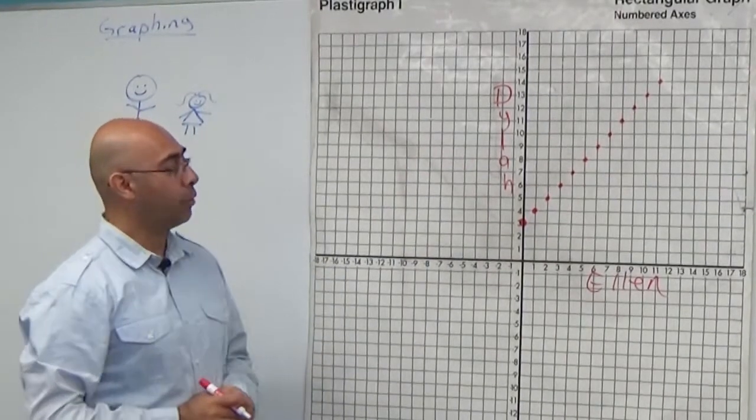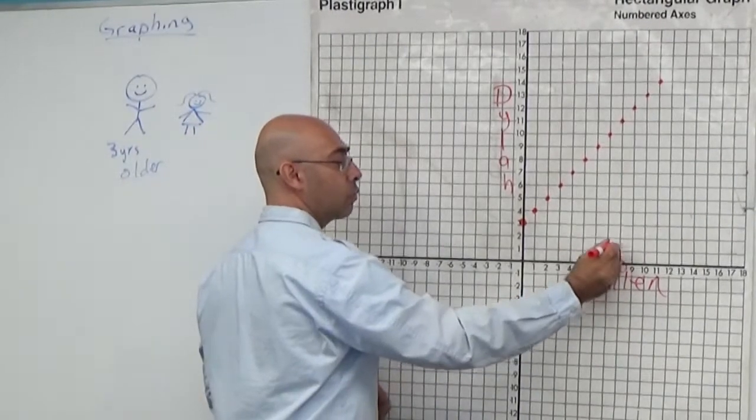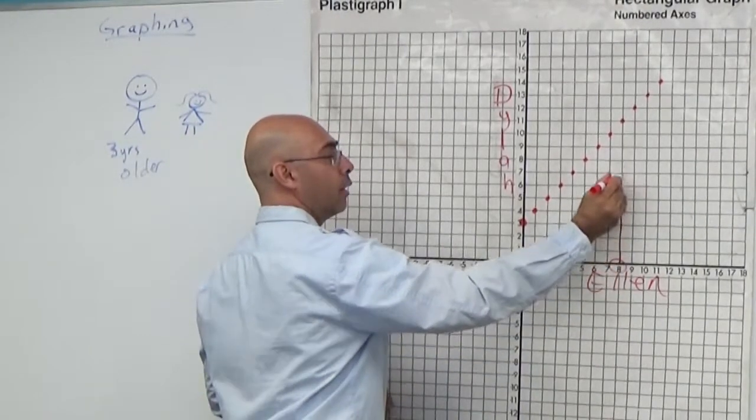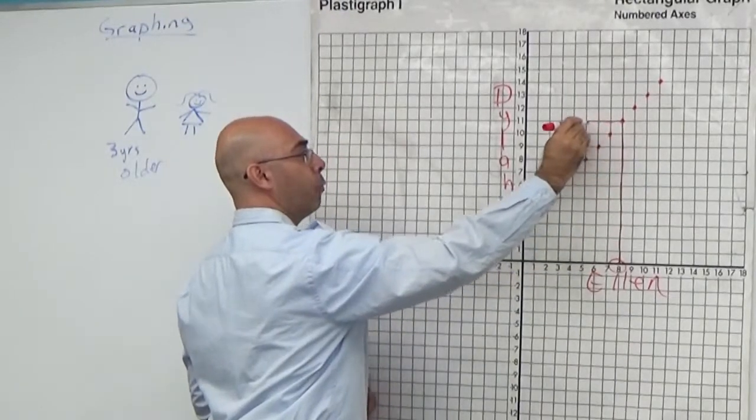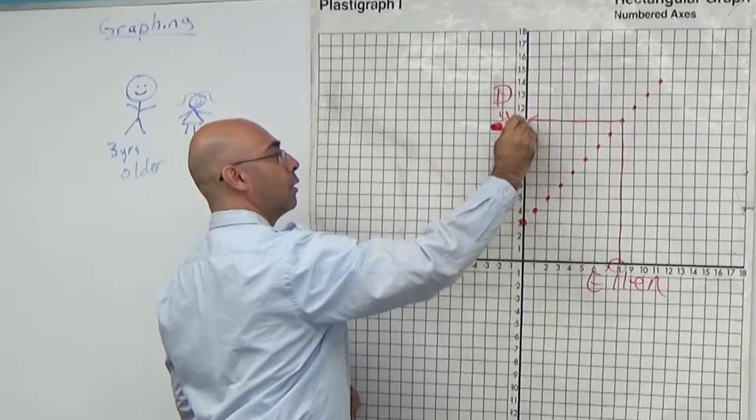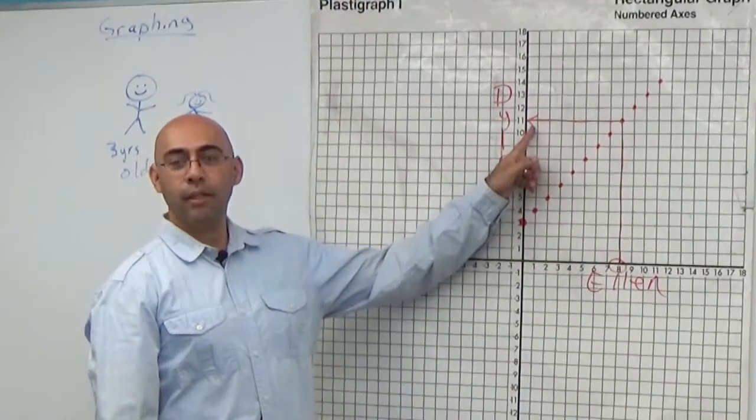So if I were to say, if Ellen was eight, I'd go to eight for Ellen, and I'll just go up this graph. And wherever that point is, I'll just go point over to Dylan's age. So when Ellen is eight, Dylan is 11.